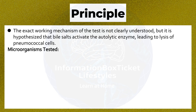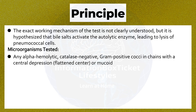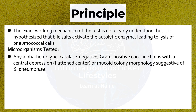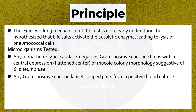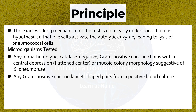Microorganisms tested include any alpha-hemolytic, catalase-negative, gram-positive cocci in chains with a central depression, flattened center, or mucoid colony morphology suggestive of S. pneumoniae, as well as any gram-positive cocci in lancet-shaped pairs from a positive blood culture.